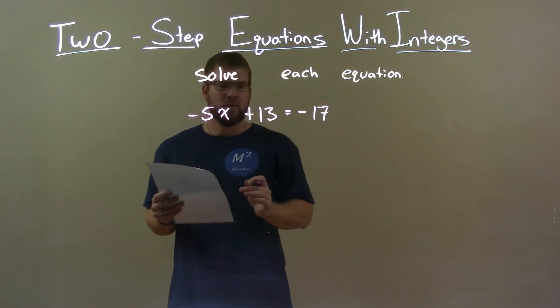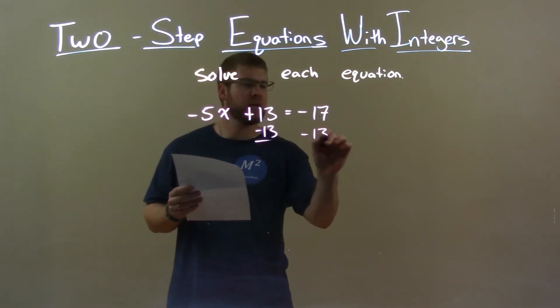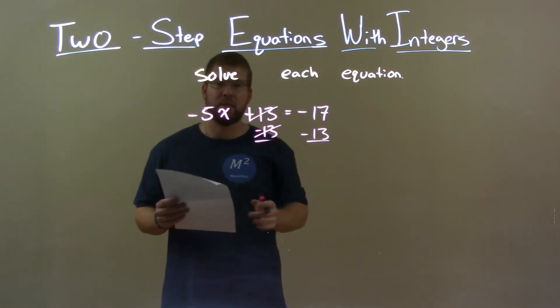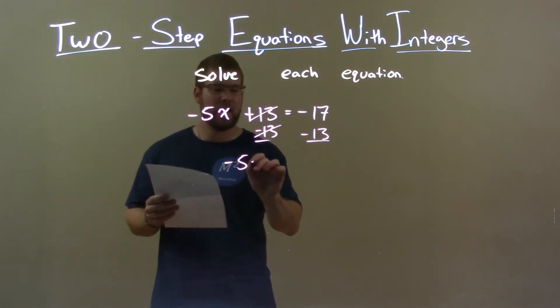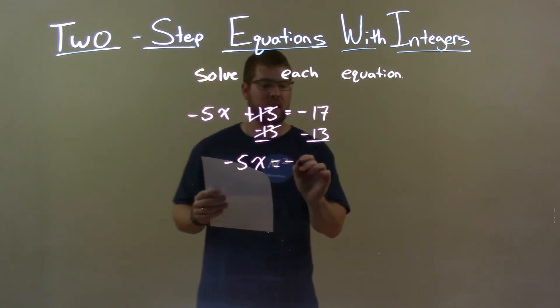Well, first step I want to do here is I want to subtract 13 from both sides. Since we're adding 13 there, if I subtract 13 I'll eliminate that from the left. Negative 5x is what's left on the left and negative 17 minus 13 is negative 30.